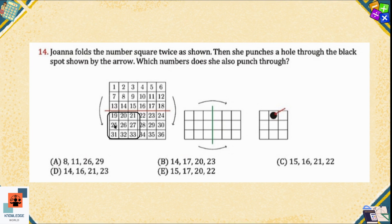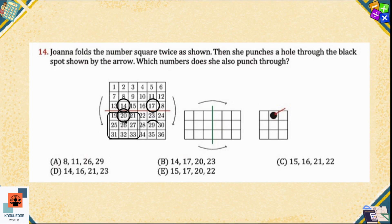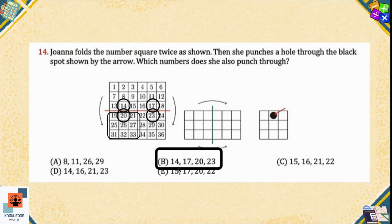If we consider one big square consisting of nine small squares, she punched number 20. The mirror image of 20 is 40. When she folded, the exact opposite of 14 is 17, and the exact opposite of 20 is 23. So these four numbers got punched. Option B is the correct answer: 14, 17, 20, and 23.